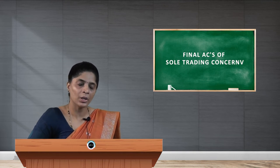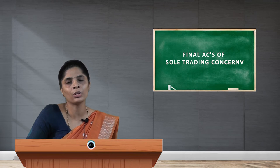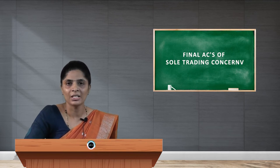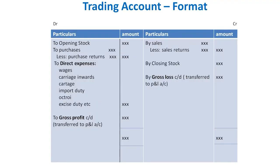Please remember that the result of the trading account acts as an important indicator of business efficiency. The trading account has two sides: debit side and credit side, each with two columns — particulars and amount. The result of the trading account is gross profit or gross loss.